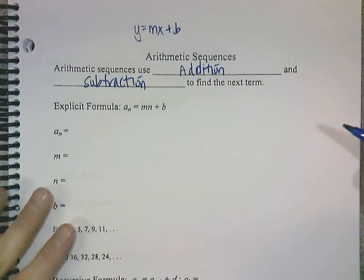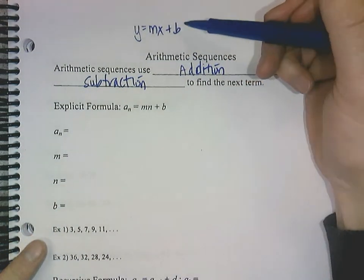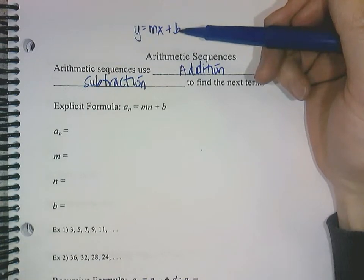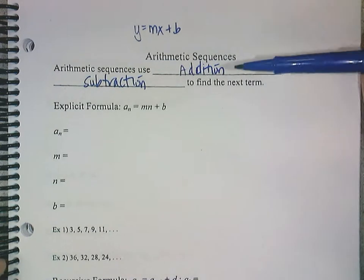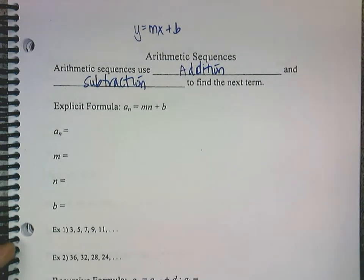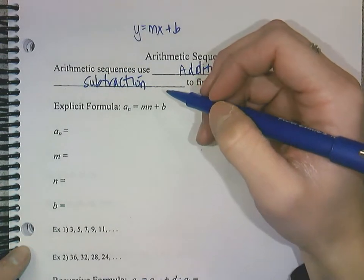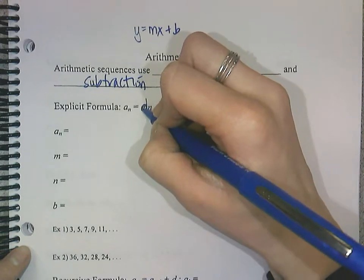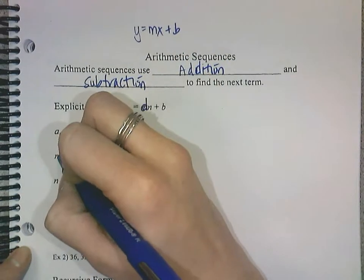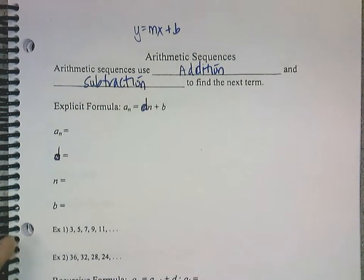But for what we're doing, this thinking about our graph kind of relates, because it's going up like it has the same slope every time. But we're going to think about it more in just what's happening to our numbers. So it's easier, because the recursive formula uses a d, if we change our m to a d. So we're all going to do that. So we're going to change our m letter to a d. Again, it will help you later.